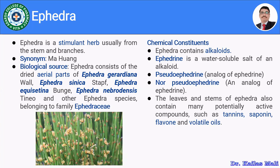The synonym of ephedra is mahum. It is obtained from the dried aerial parts of Ephedra gerardiana, Ephedra sinica, Ephedra equisetina, Ephedra nebrodensis, or other ephedra species belonging to the family Ephedraceae. Look at the image to understand how the aerial parts of ephedra look.